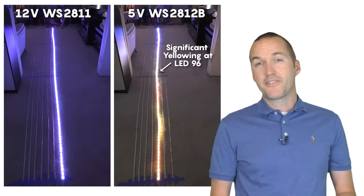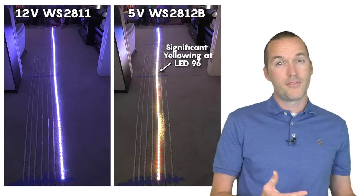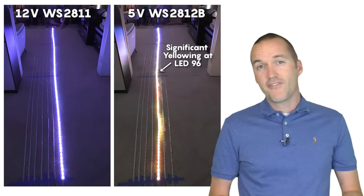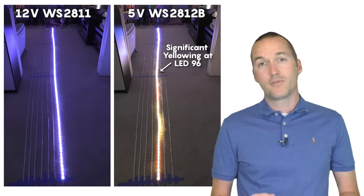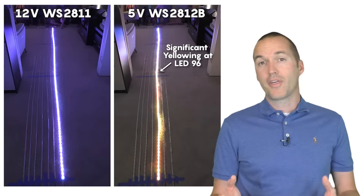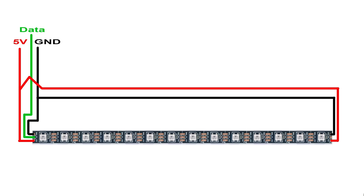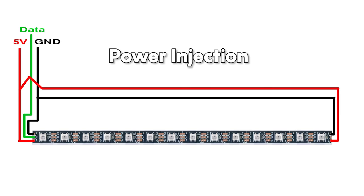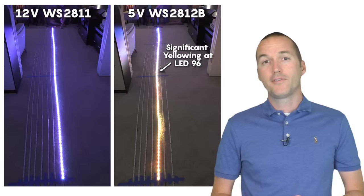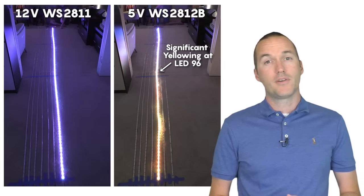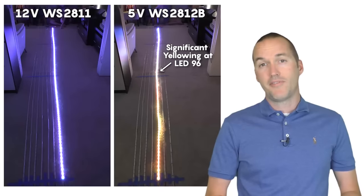You can see the difference in color accuracy between the 12 volt WS2811s and the 5 volt WS2812B when they're both outputting 100% brightness for the whole strip. The fix for this is to apply power at both ends of the LED strip in a method called power injection. But in cases where frequent power injection isn't possible, 12 volt strips like the WS2811 should typically be favored.